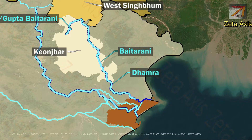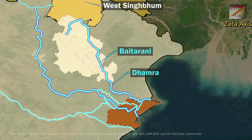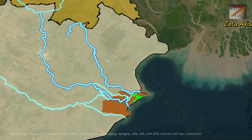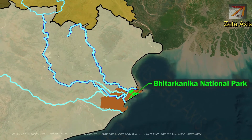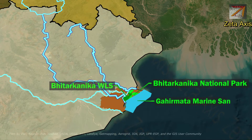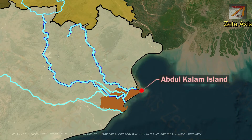The Baitarani river joins a distributary of the Brahmani river and then flows into the Bay of Bengal near Chandbali. In the delta formed by the Baitarani and Brahmani rivers, we find Bhitarkanika National Park, Bhitarkanika Wildlife Sanctuary, as well as Gahirmatha Marine Sanctuary. At the mouth of the Baitarani river we have Wheeler Island, also called Abdul Kalam Island, which is used for testing missiles of India.